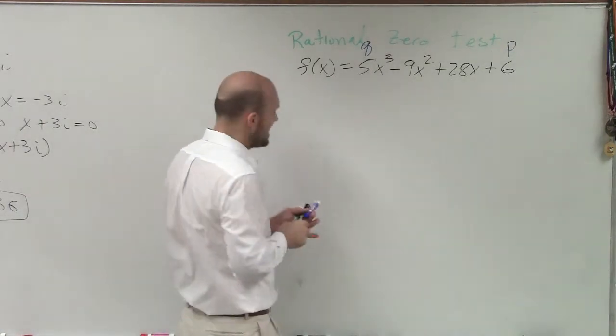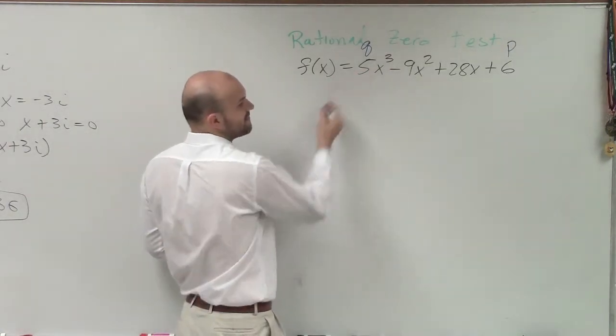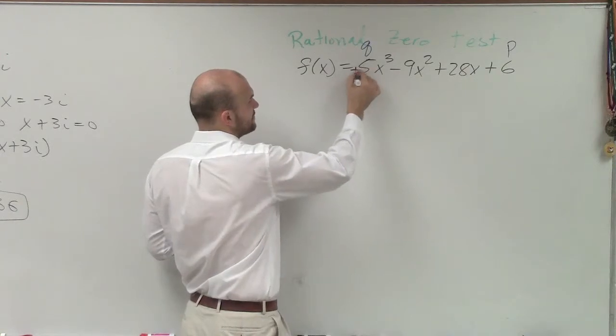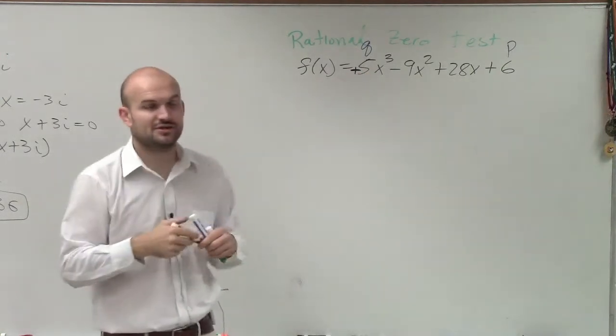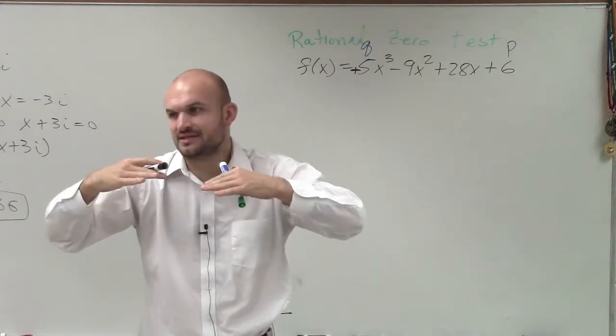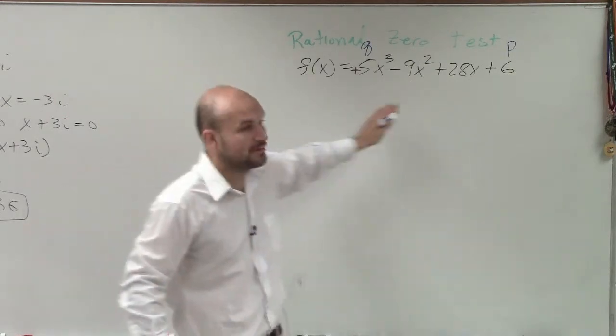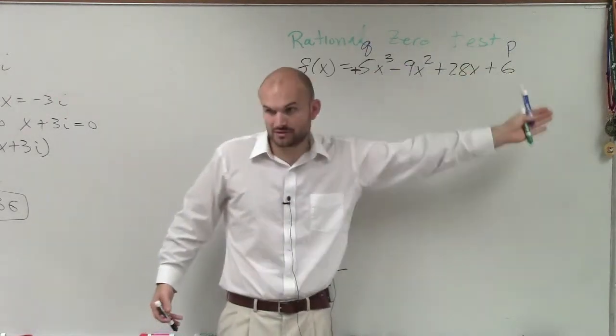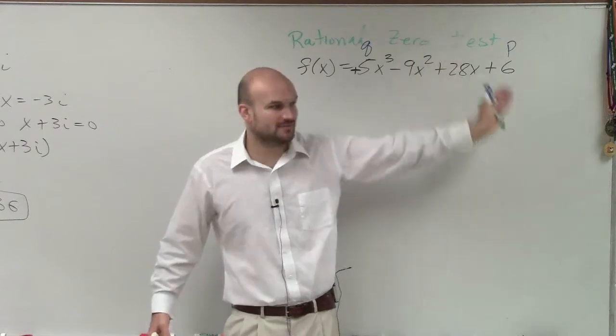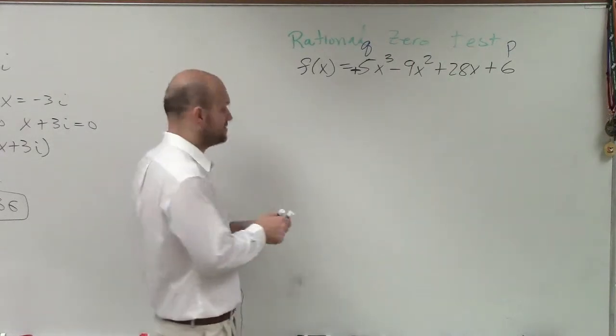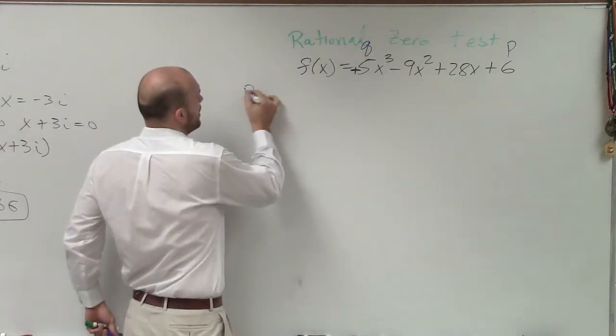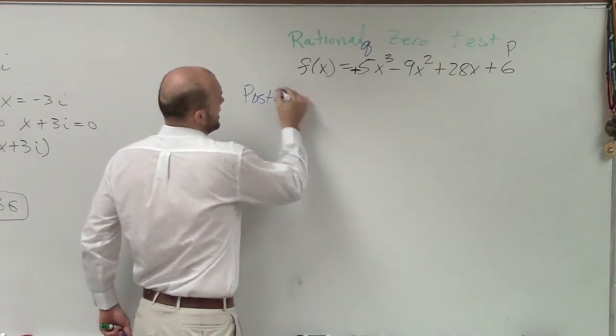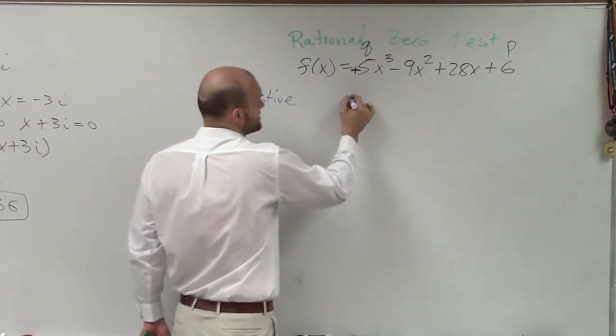What you do is you just take the sign. Now, we notice that this is 5x cubed, so we know that's positive. So what I like to do is I like to bring down the signs of each monomial. Remember, a polynomial is the sum of monomials. So what I like to do is I just like to bring them down. So if I'm going to determine how many positive real zeros we have, I bring down the signs.